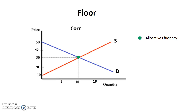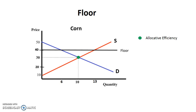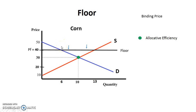A floor is opposite of a ceiling — a floor is set above equilibrium. In this case it's set at a price of $40, denoted P subscript F. With this binding price, the government is saying that you cannot charge a price lower than $40. In the ceiling case it was set below to help the consumer; here the government is trying to help the producer, so you can't charge a price lower than $40 even though the market is set at $30.